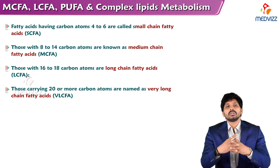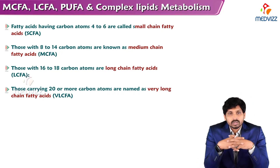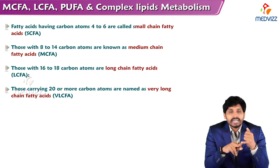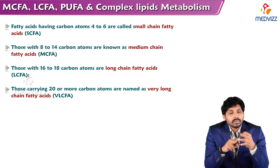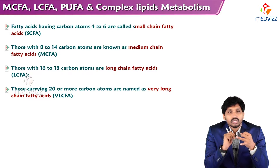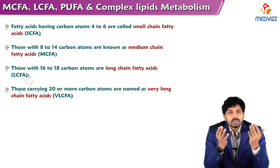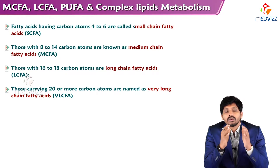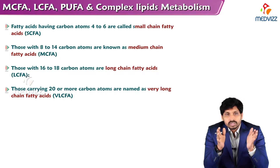To talk about fatty acids, there are different types of fatty acids based on the chain length, based on the even numbers, based on the odd numbers, and based on the saturation. First we'll talk about classification based on chain length, that is the number of carbons.